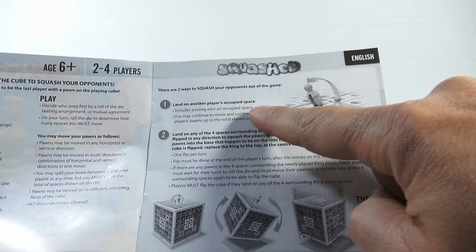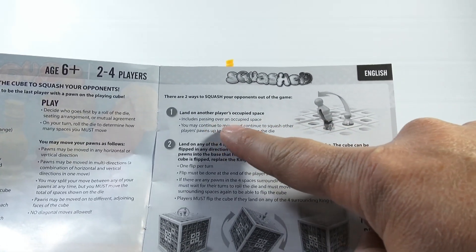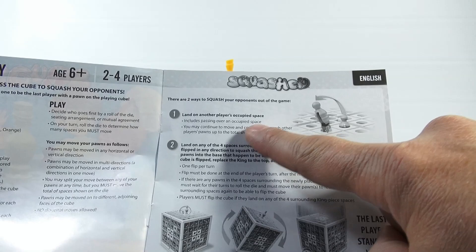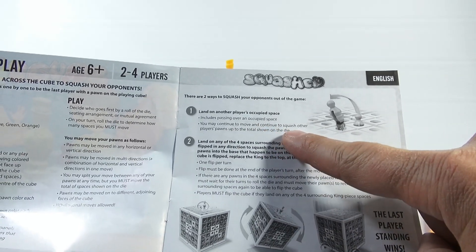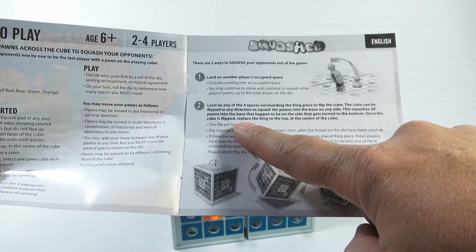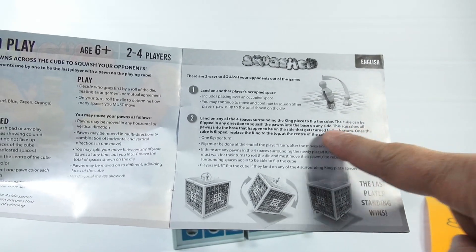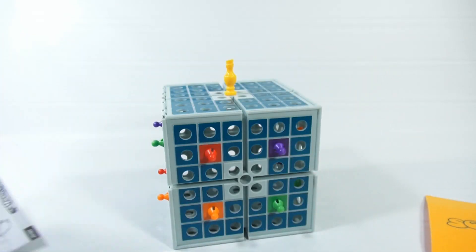So here are two ways to squash your opponents. Land on another player's occupied space. Includes passing over an occupied space. You may continue to move and continue to squash other players' pawns up to the total shown on the die. And then land on any of the four spaces surrounding the king to flip the cube. The cube can be flipped in any direction to squash the pawns into the base.